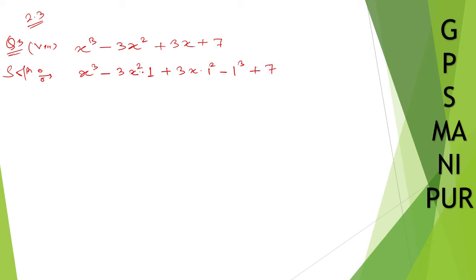Now 7 is here but 1 cube you cannot see anywhere. 3x square I can write down like this, 3x also I can write down like this, but minus 1 cube is extra here.